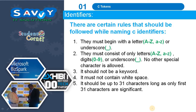A special kind of identifier called a statement label can be used in goto statements. There are certain rules that should be followed while naming C identifiers: they must begin with a letter (A to Z, a to z) or underscore; they must consist of only letters, digits (0 to 9) and underscore — no other special characters are allowed; it should not be a keyword; it must not contain white space; and it should be up to 31 characters long, as only the first 31 characters are significant.